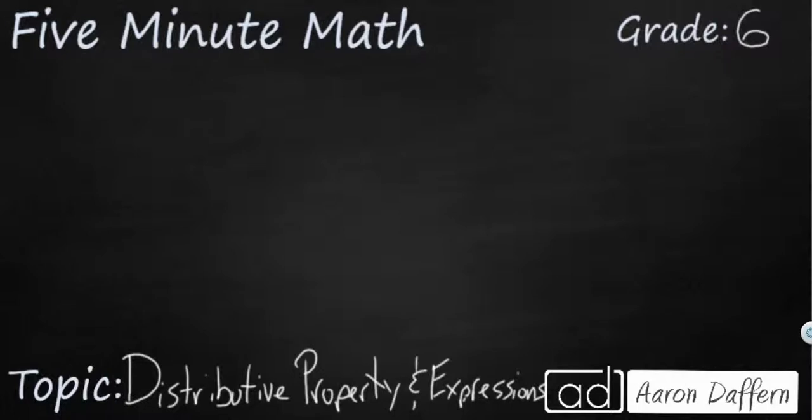So the distributive property is sometimes known as the breaking apart property. What this means, it's going to look a little bit strange, but I'll explain what it means. You'll see something like this: a(b+c) equals ab plus ac.